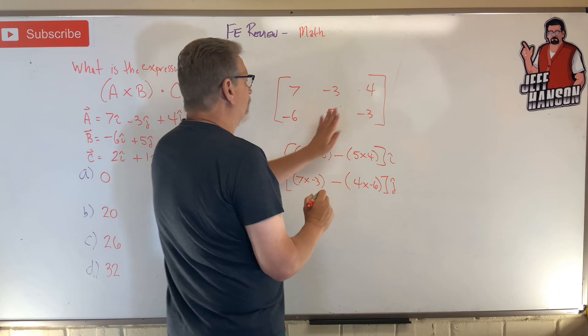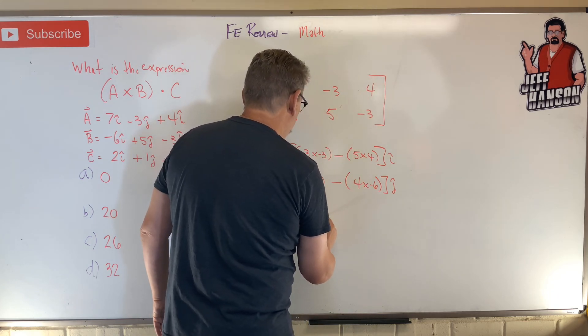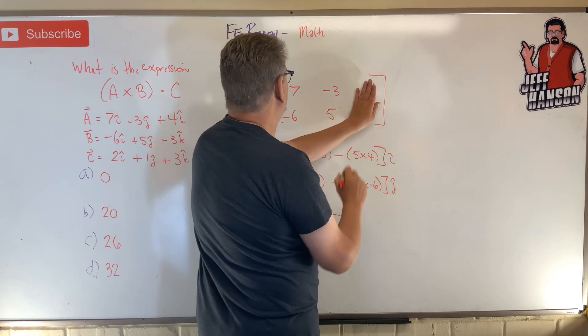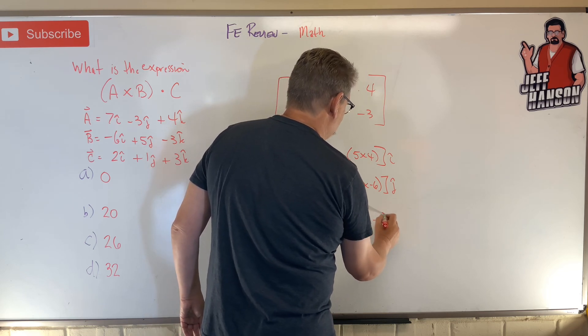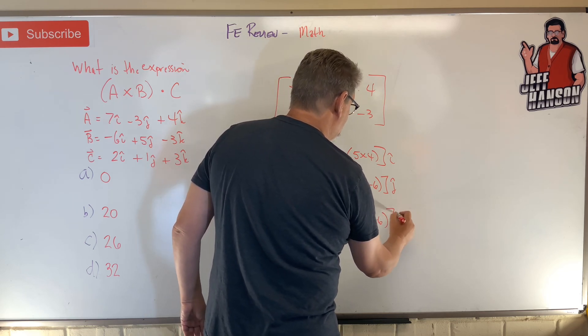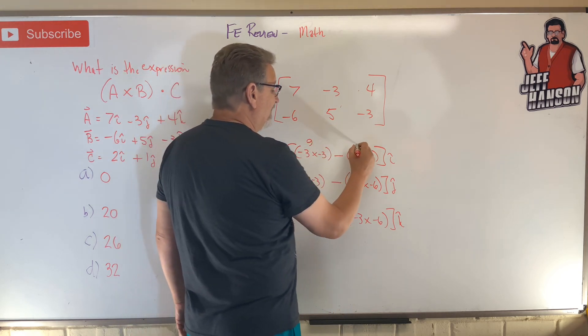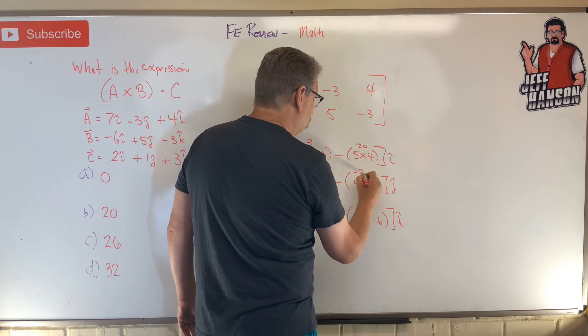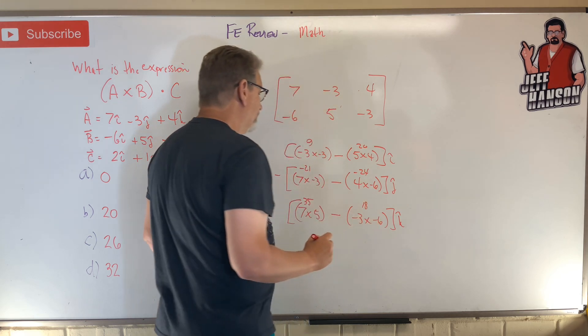And then for the final one, we're going to cover up this one over here. And we've got seven times five minus what? Seven times five minus minus three times minus six. Lots of parentheses. Keep you from making a sign error. Let's see. That's nine. That's 20. That's minus 21. That's minus 24. That's 35. That's 18.